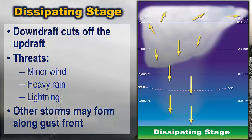In the dissipating stage, you no longer have air rising up and condensing into the storm. Instead, cool air rushes down and out of the cloud — the bottom of the cloud begins evaporating as the downdraft cuts off the updraft. There are still some severe weather threats: gusty winds, heavy rain, and lightning remain possible. The cold air shooting out from the decaying thunderstorm can also trigger additional storms to develop along the gust front or cold pool.